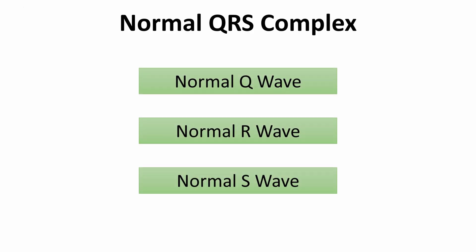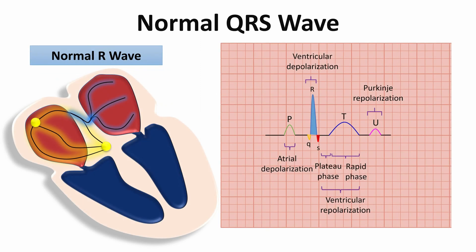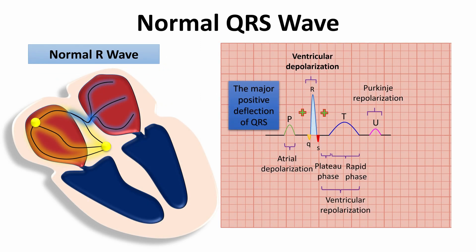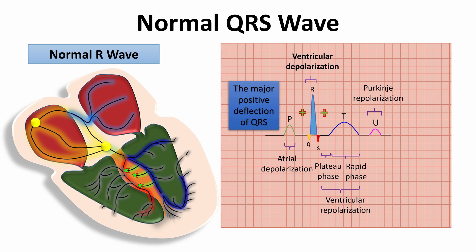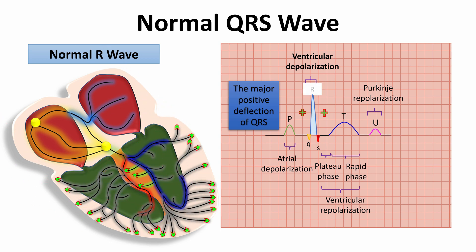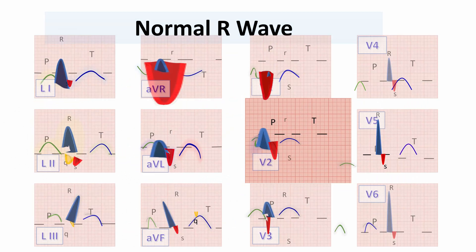The R wave is the major positive deflection of the QRS complex. As we know from the previous lecture, the Q wave is the negative deflection that precedes the R wave, and it represents septal depolarization from left to right and upward — opposite to the major depolarization of the left ventricle toward the apex of the heart, which is represented by the R wave. The R wave is upright in most ECG leads.